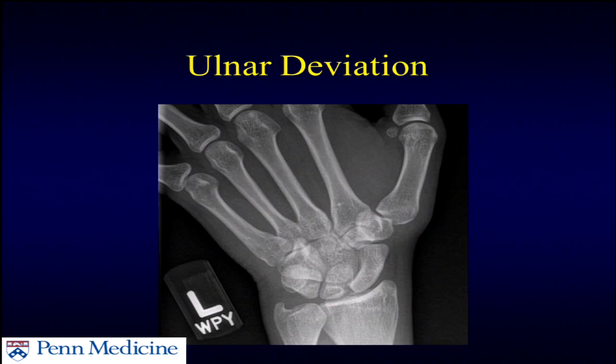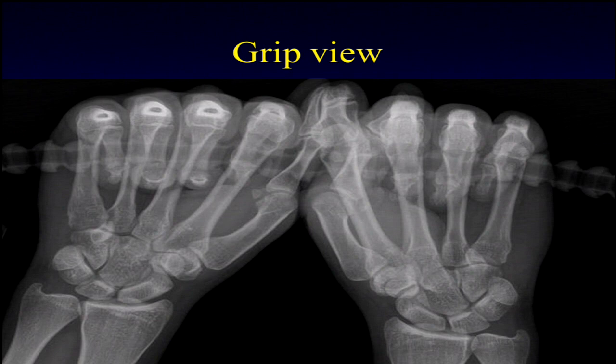With the ulnar deviation view, you want slight wrist extension with as much deviation as you can get. Scaphoid fractures can occur in up to roughly 10% to 15% of these fractures. For the grip view, I like to have both hands on the film so I can compare whether the patient simply has a somewhat widened SL interval that has been present on both sides since infancy.